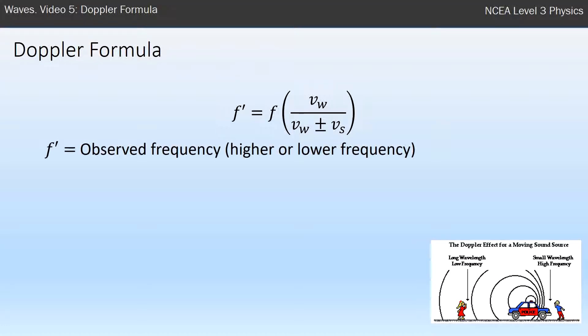Each of the symbols: F with the dash is the observed frequency, so what either the person in the blue shirt or the red shirt will hear, and that could be higher or lower. F is the frequency of the source, so that's whatever frequency the police car siren is giving out when it's stationary.